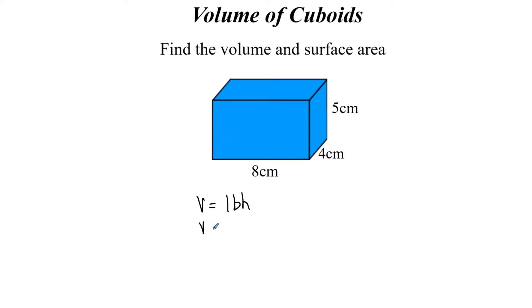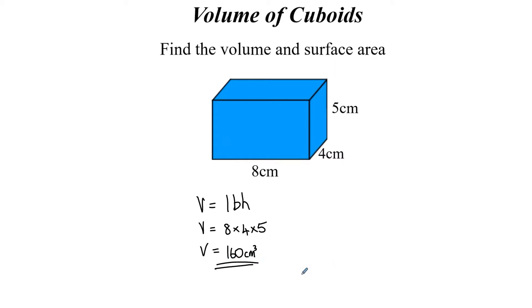So V equals L times B times H. In this case it's 8 times 4 times 5. This could come up in a non-calculator paper, so 4 times 5 is 20, times that by 8 is 160. Your units for volume, because it's three-dimensional, are cubic centimeters — cm cubed. That's how you find the volume of a cuboid.